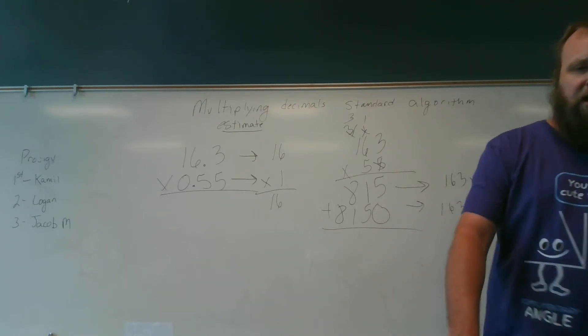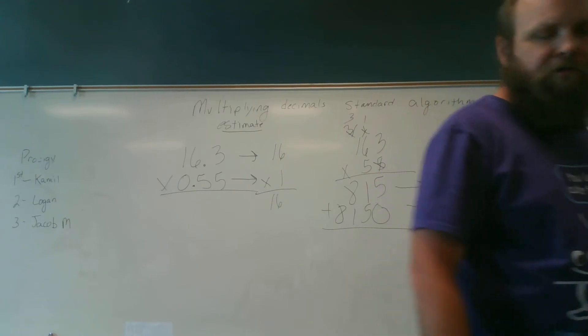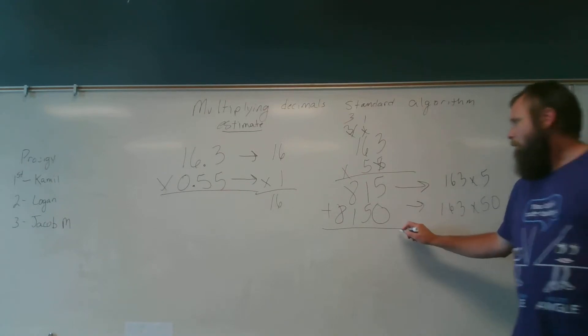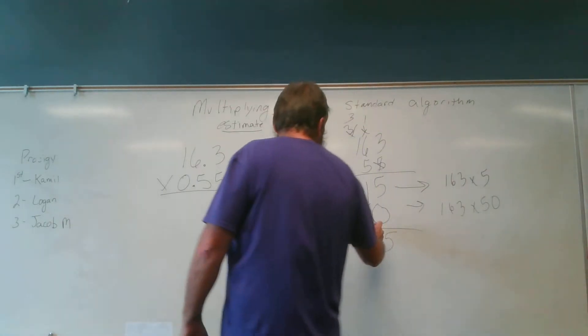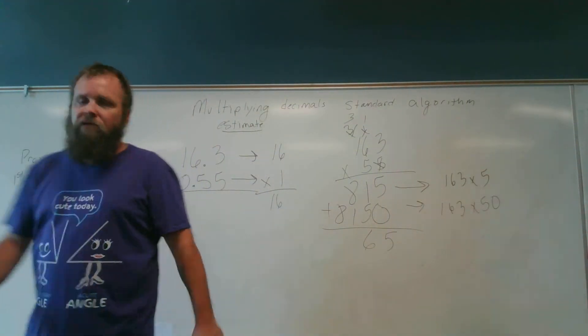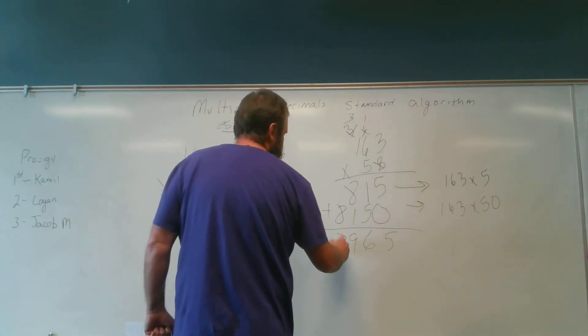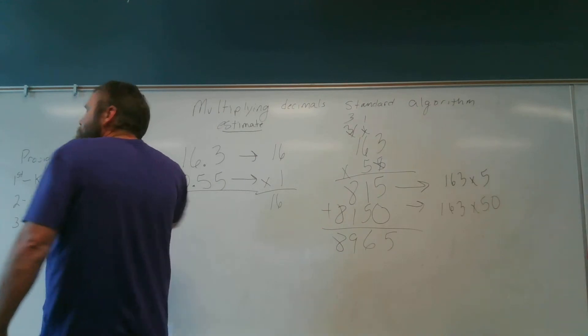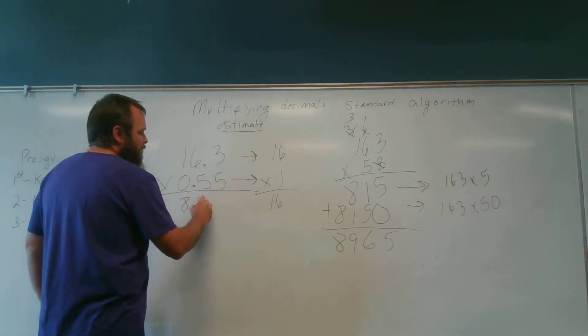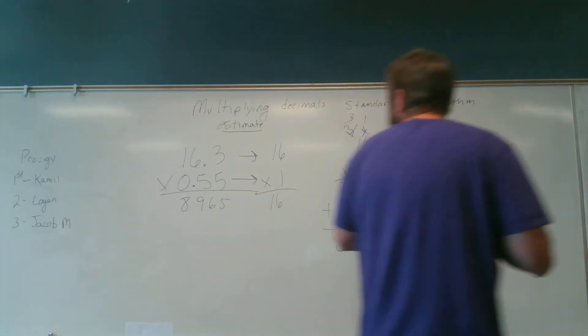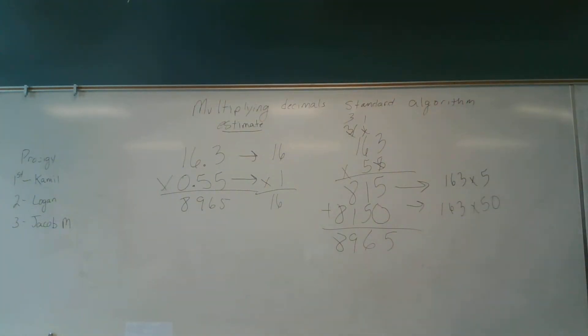Now we're going to find the sum of these two products. Jacob M., help me out. 5 plus 0 is 5. 1 plus 5 is 6. 8 plus 1 is 9. And 8 plus nothing else, 8. So these are the digits in my answer: I have an 8, a 9, a 6, and a 5. 8, 9, 6, 5.